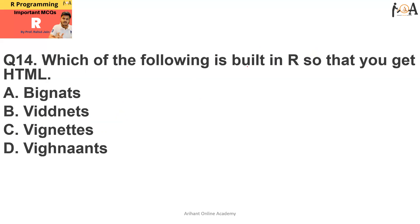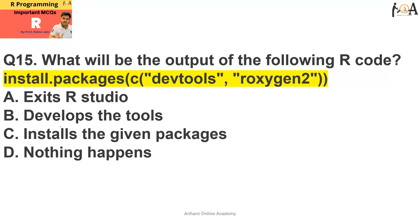Question number 14: which of the following is built in R so that you get HTML output? The answer is knitr, which allows you to convert R into HTML. Option C is the correct answer.